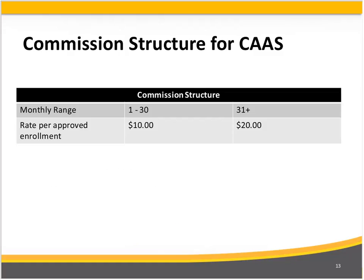SafeLink has recently ramped up the commission structure for community action agencies. If an agency enrolls anywhere from 1 to 30 applicants in a month with successful approvals, they receive $10 per application. Any successful applications above 31 in that month goes up to $20 per application. This monthly commission structure has been in place since January 2015, and many community action agencies are earning significant money each month by incorporating SafeLink enrollment into their regular social service intake process.